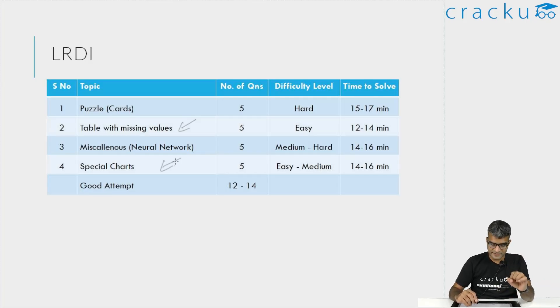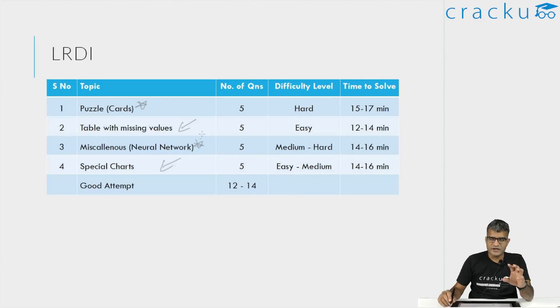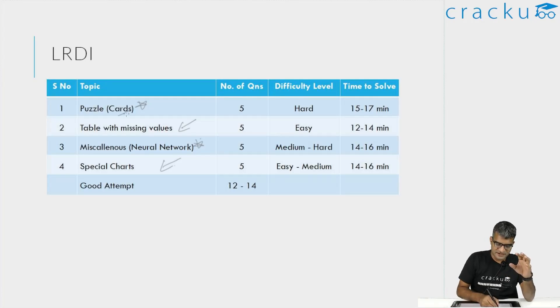If you spend about 15 minutes on each of these two sets, you'll get both correct. They are not very difficult. Once that is done, the important part is the two sets which were slightly more difficult — the neural network one is easy to medium, maybe slightly hard, but probably not as hard as the cards puzzle set.